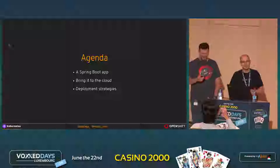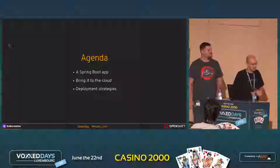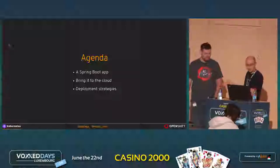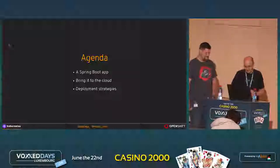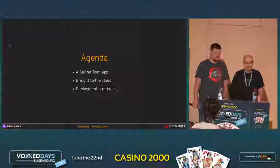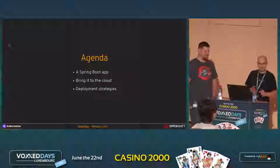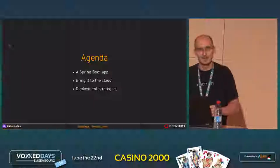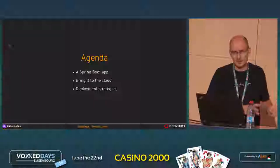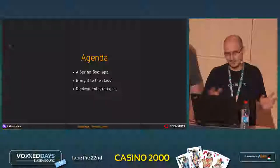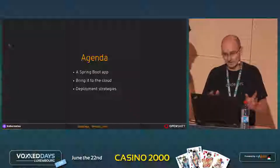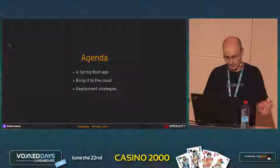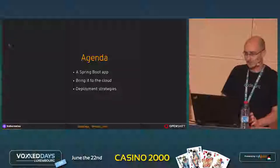So the agenda is very simple. We start with a small, cute Spring Boot application, bring it to the cloud somehow, and in the end we will speak about deployment strategies. We are very sorry not to be able to address A-B testing. We've done this presentation twice already, and we know there's no time for all three of them, so A-B testing was struck through and will not be presented.